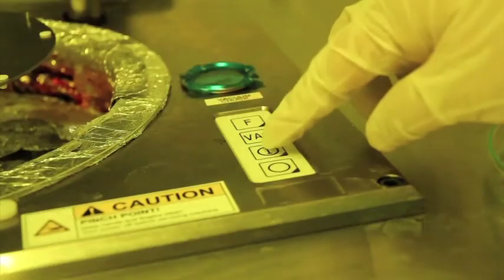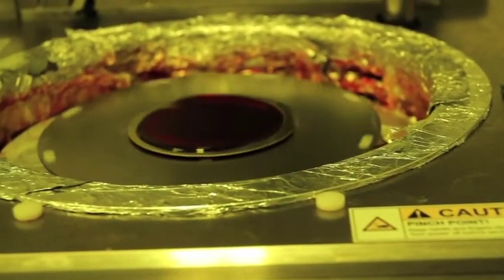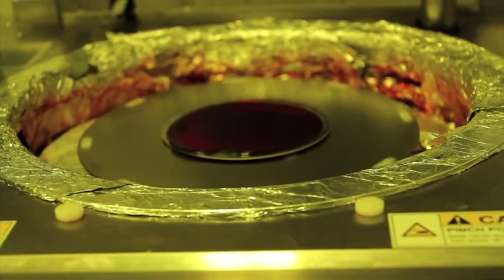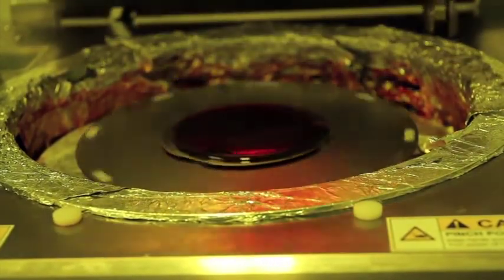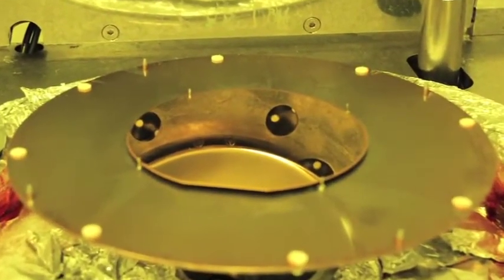To start the spin coating process, press 1 and stand clear of the closing lid. Once the spin coating process is finished, remove the wafer carefully, avoiding contact with the wet surface, and place in a shallow glass dish.